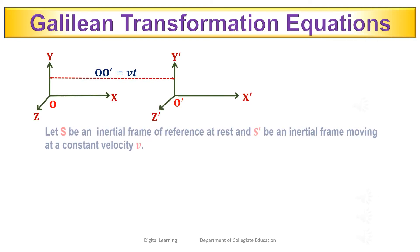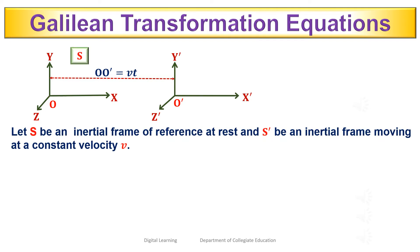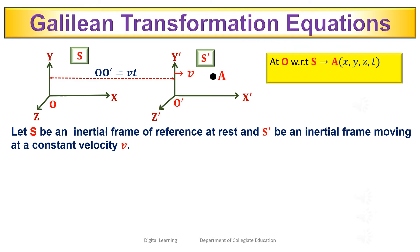Let S be an inertial frame of reference at rest and S' be an inertial frame moving at a constant velocity v. The position of material point A measured by an observer at O with respect to frame S is given by coordinates x, y, z, and t. The position of the same material point A measured by an observer at O' with respect to S' is given by coordinates x', y', z', and t'.